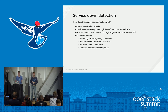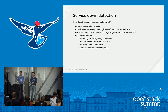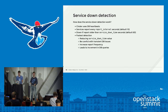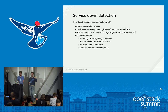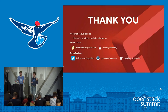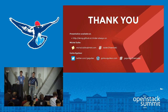How Cinder detects that a service is down: services report every 10 seconds, and if they haven't reported anything after 60 seconds, they are considered down. We can make detection faster, but we should be careful about transient database errors and the increased database load that more frequent reporting would generate.